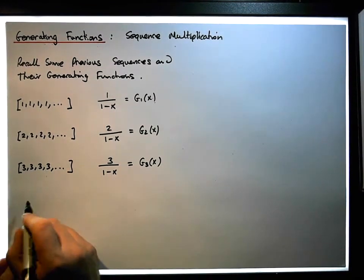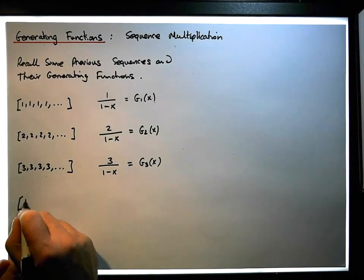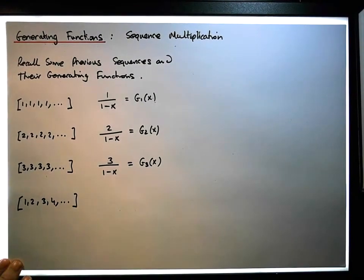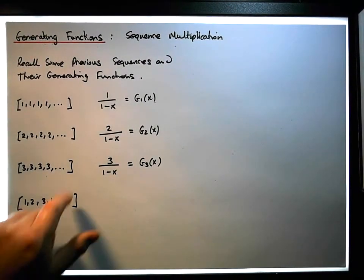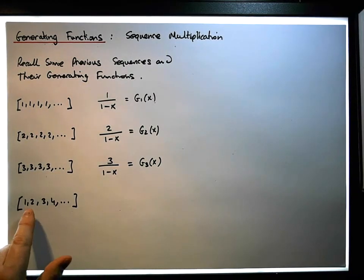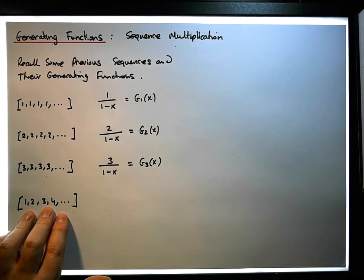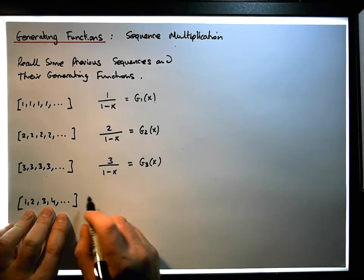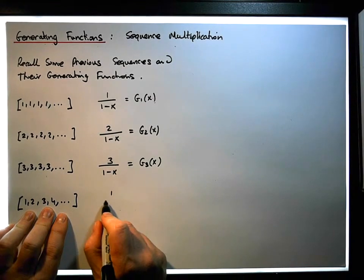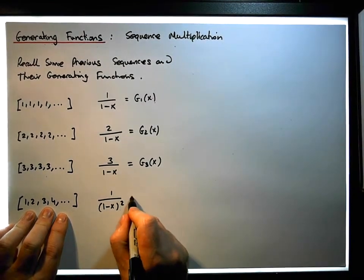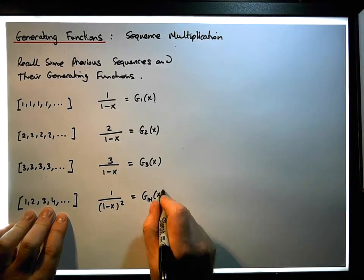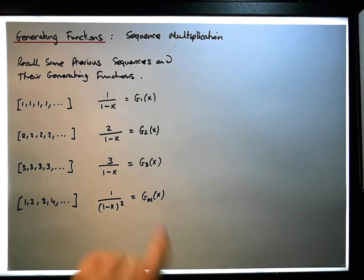In a previous video, we had a look at the natural numbers: 1, 2, 3, 4, ... We did it two ways — using sequence multiplication in a previous video, and in an earlier video we used differentiation to derive this particular sequence. Its generating function is simply 1/(1 minus x)², and we symbolize that by gₙ(x) as the generating function of the natural numbers.